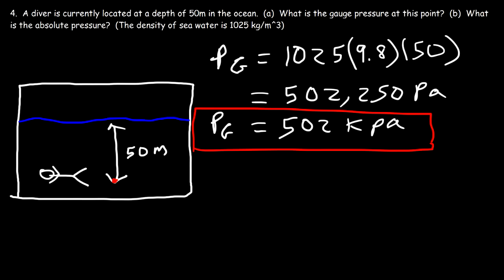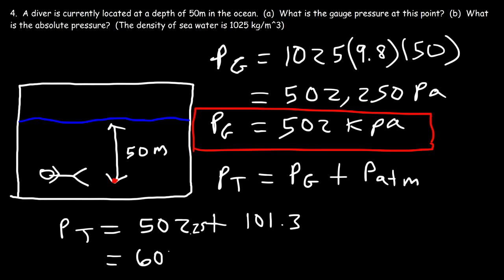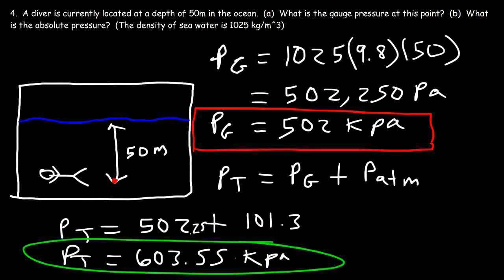Now for the absolute pressure: it's based on the weight of the seawater above the diver (the gauge pressure) plus the pressure of the atmosphere. The gauge pressure is 502.25 kPa and the atmospheric pressure is 101.3 kPa. So the absolute pressure is 502.25 plus 101.3, which equals 603.55 kilopascals — the absolute pressure at that depth.